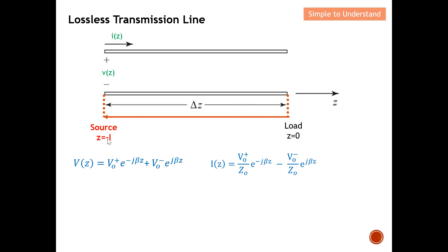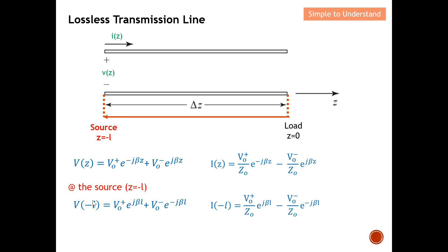Now let's move on to the source, where z equals minus l. I replace all z terms with minus l. For the voltage, minus times minus becomes positive, so the exponential term becomes e to the plus j beta l. For the other term, multiplying by minus l gives a negative sign. Similarly for the current, I substitute z equals minus l and obtain the corresponding current equation at the source.